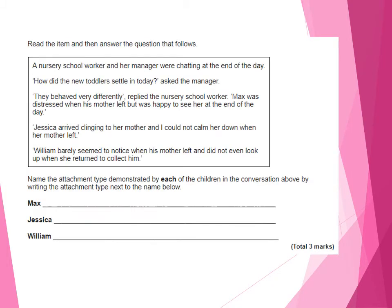Applied scenario: a nursery school worker and her manager were chatting. 'How did the new toddlers settle in?' 'They behaved very differently. Max was distressed when his mother left but was happy to see her at the end of the day. Jessica arrived clinging to her mother and would not calm down when her mother left. William barely seemed to notice when his mother left and did not even look up when she returned.' Name the attachment type demonstrated by each child. Max is securely attached. Jessica is insecure resistant. William is insecure avoidant.